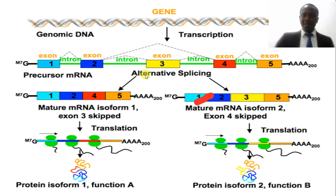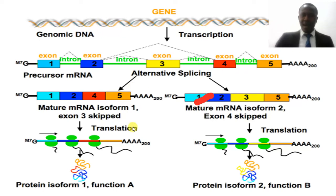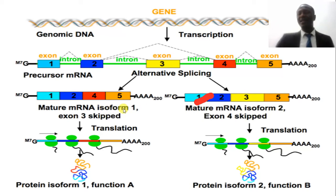Normally each exon can produce its own phenotype. But we are going to see situations where different exons combine — like in the case of exons one, two, three, four, five being combined, versus a different manner where we have exons one, two, four, and five — the third exon is absent. This combination is going to produce a different version of protein.